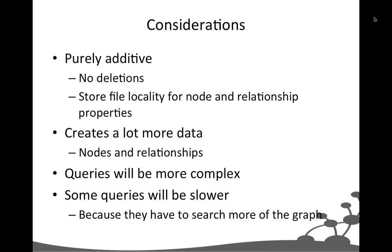The downside is immediately obvious: we end up creating a lot more data. Every time something changes we create new nodes and new relationships, resulting in an order of magnitude increase in graph size on disk. And almost all queries have to be time-sensitive, introducing WHERE clauses comparing timestamps. Even simple queries become more complex, and some queries will be a little slower because we have to search more of the graph to answer ostensibly the same question.